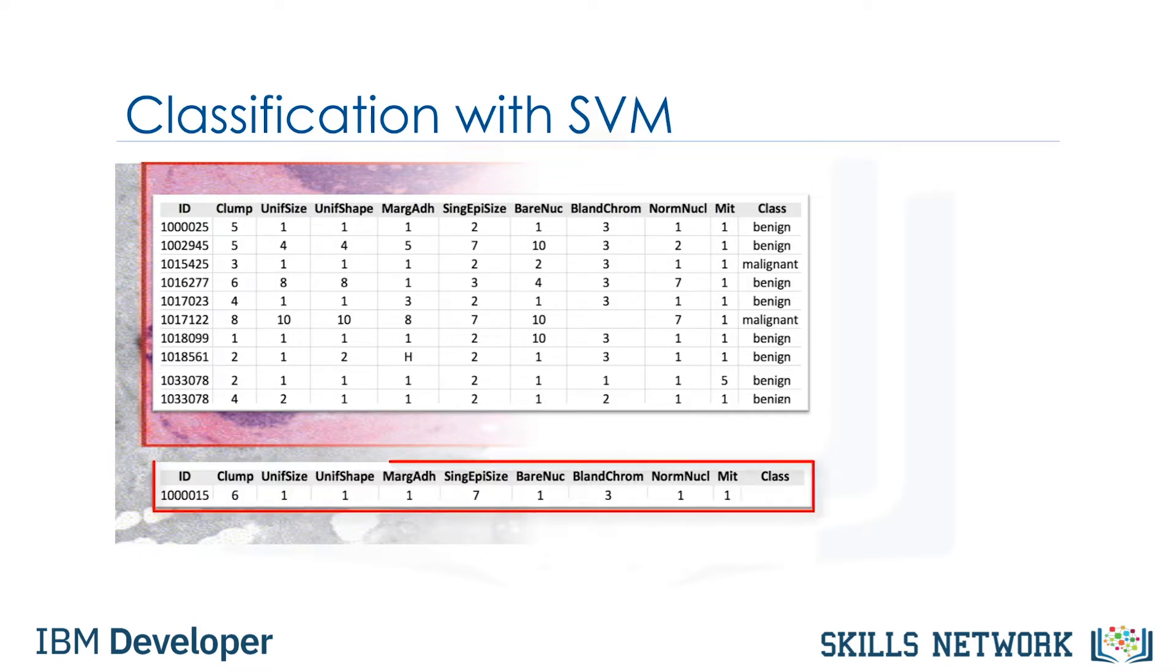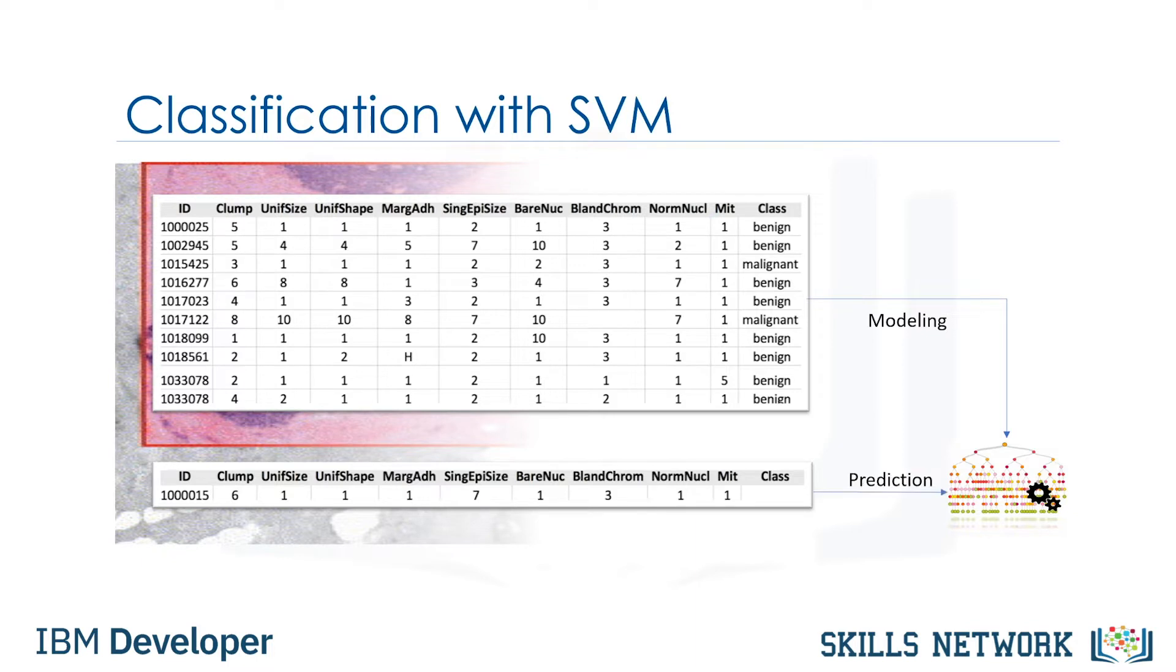You can use the values of these cell characteristics in samples from other patients to give an early indication of whether a new sample might be benign or malignant. You can use Support Vector Machine, or SVM, as a classifier to train your model to understand patterns within the data that might show benign or malignant cells. Once the model has been trained, it can be used to predict your new or unknown cell with rather high accuracy.